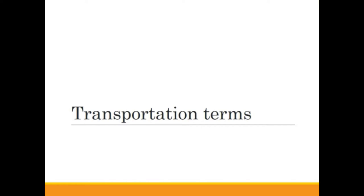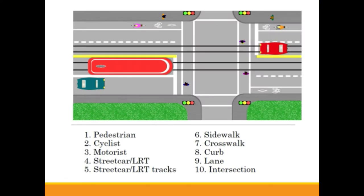Welcome back. In this section, we're going to talk about some different key transportation terms so that you understand the different parts of an intersection, a road, and the different forms of travel you might take. Here is our example intersection with a variety of different features. You can see the terms we will cover noted along the bottom. As we go through each term, I'll provide you with a brief description, there will be a visual, and the location will be noted within our intersection example. Let's continue.